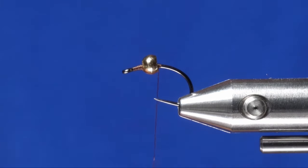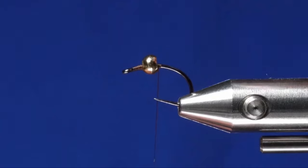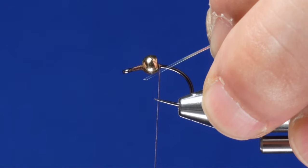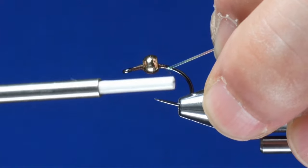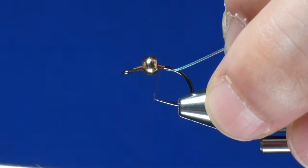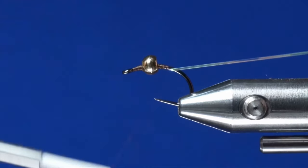Now for the ribbing, we're going to use some pearl flashaboo. Just tie it in right behind the bead and take it to the bend of the hook.